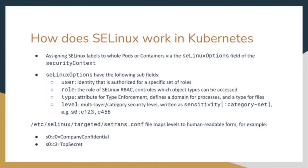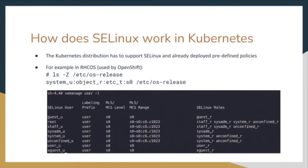We also have types, which are used for type enforcement — they define a domain of processes and a type of files. The level is used for multi-layer or category security, written as sensitivity colon category set. For example, it can be S0, C1,2,3, and can also be specified using ranges. The file /etc/selinux/targeted/setrans.conf maps those levels to human-readable form — for example, S0:C0 can be 'company confidential' and S0:C3 can be 'top secret'. Using ls -Z, we can find the SELinux context of a file; for example, for /etc/os-release, the user is system_u, the role is object_r, the type is etc_t, and the level is S0.